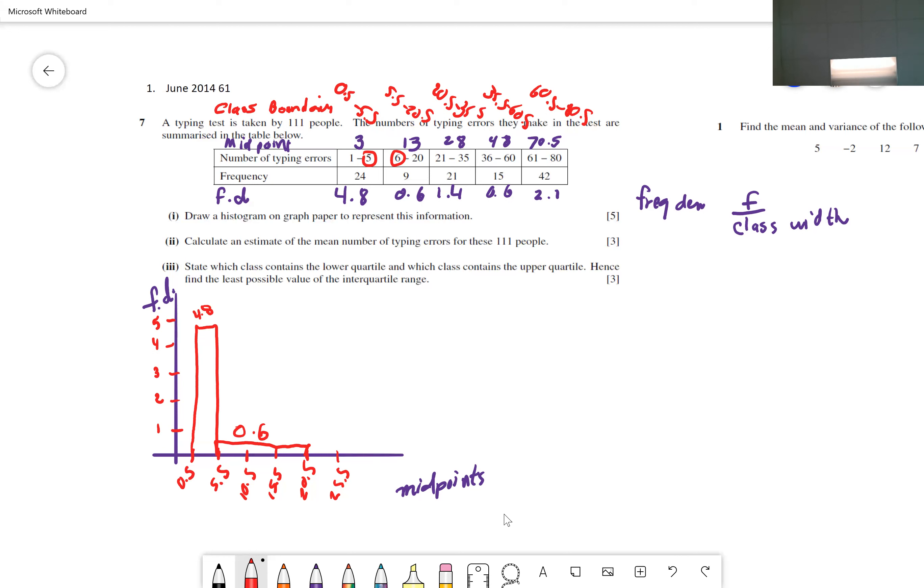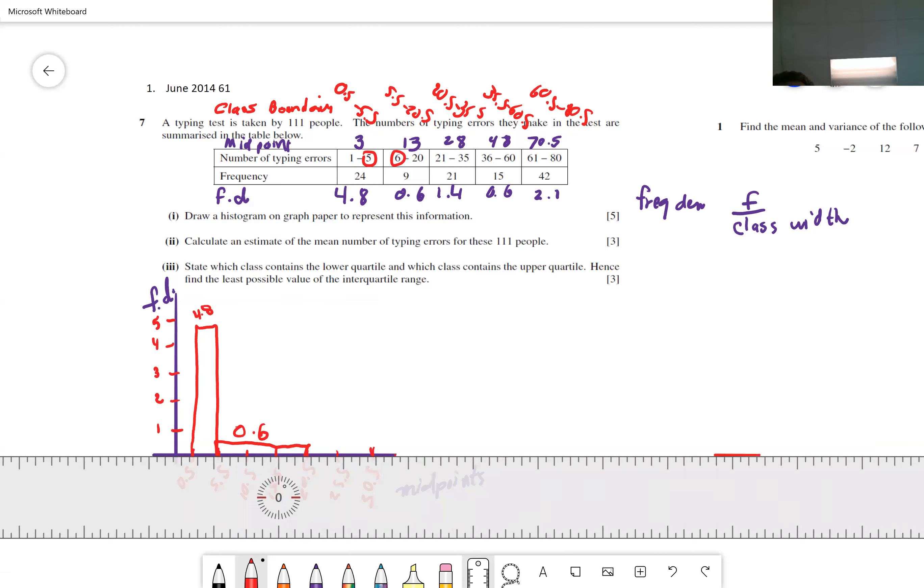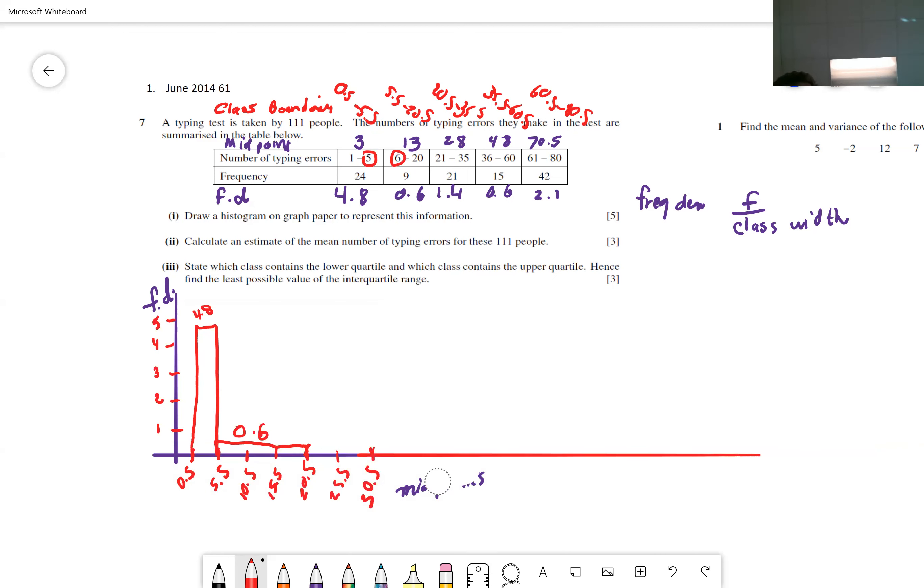Let me make my frequency density here. So for 0.5 through 5.5, it comes out to 4.8. So I make my bar. And for 5.5 through 20.5, it's 0.6. So now this looks like this. And that's so important that you do that. So it looks very different than the graph you did. Because by doing frequency density, you're allotting for different class widths.